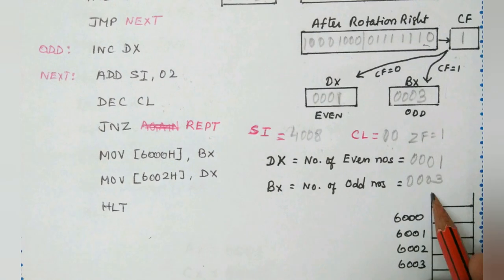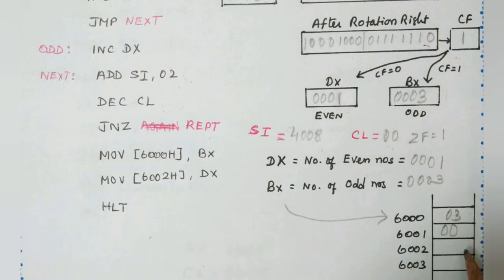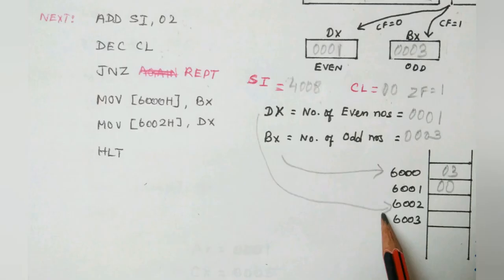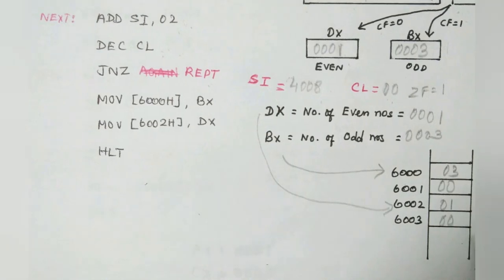Now we can obtain the results from DX and BX registers. BX registers hold the odd number of counts, and DX will be having even number of counts. So totally 4 numbers are given. In that we found odd numbers 3 numbers, even is 1 number. That is stored in the consecutive location. Thank you for watching the video.